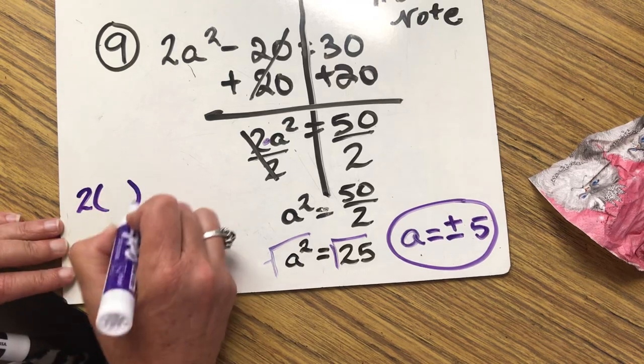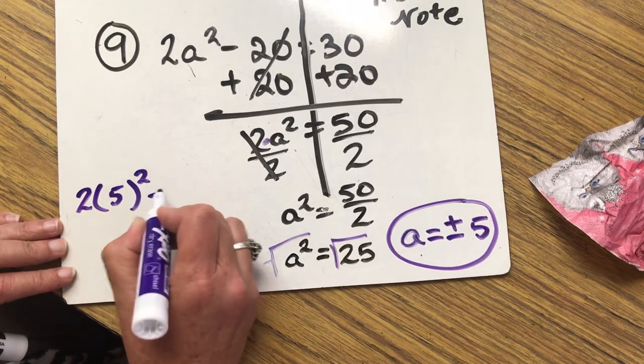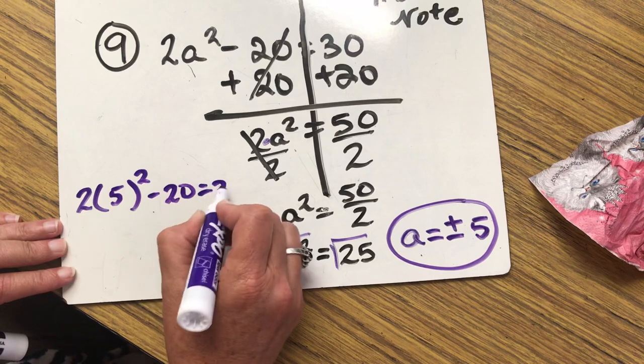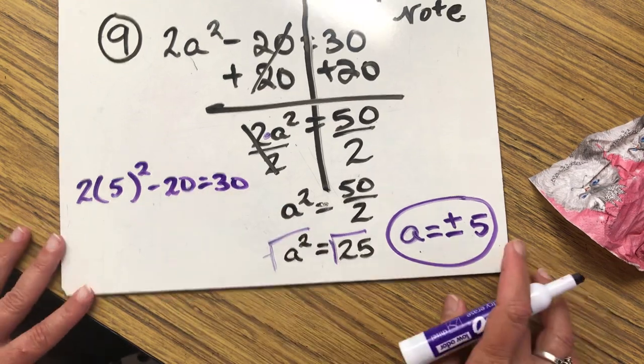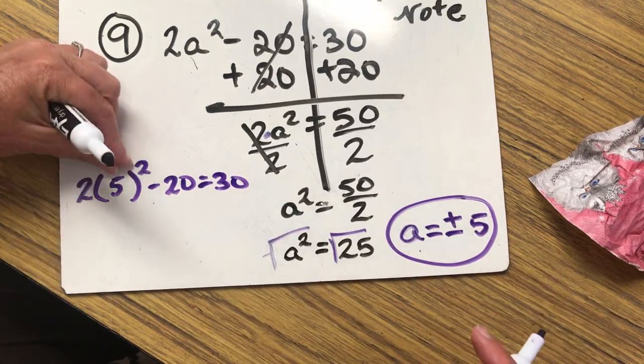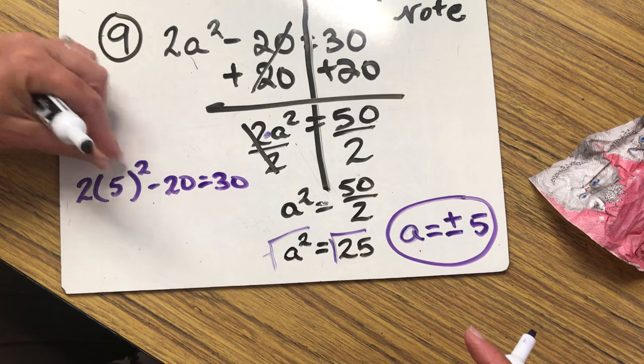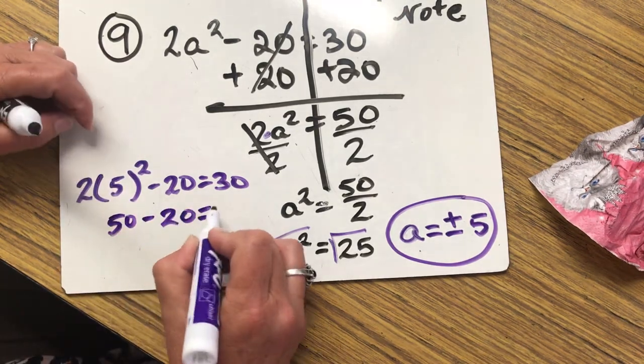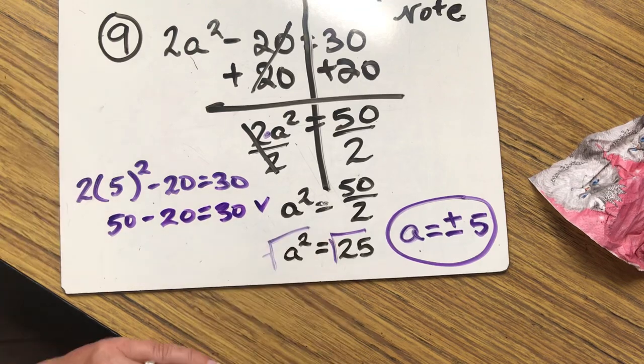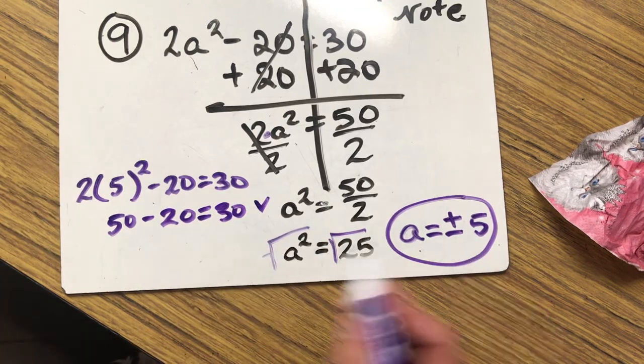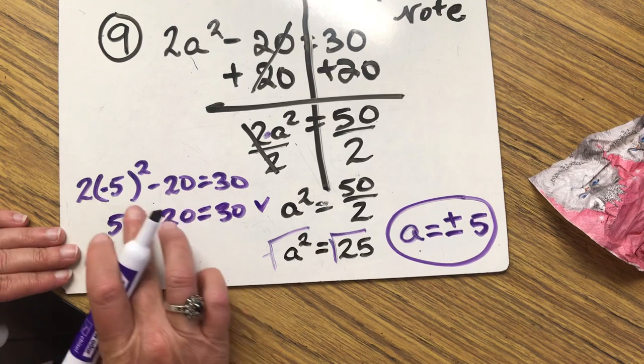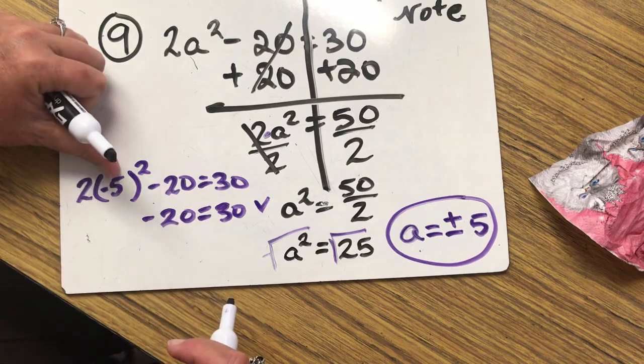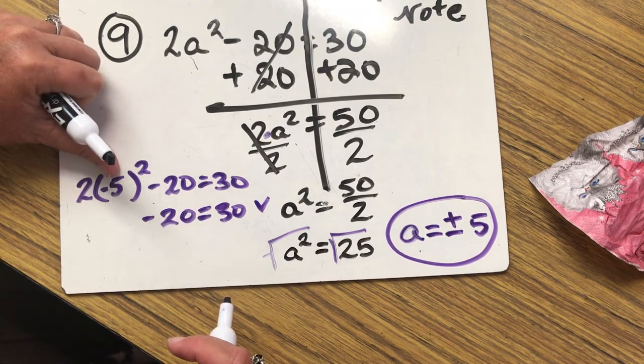So 2, 5 squared minus 20 equals 30. I'm just doing a quick check. Positive 5. So 5 squared is 25. 25 times 2 is 50. 50 take away 20 is 30. That checks. Let's check minus 5.